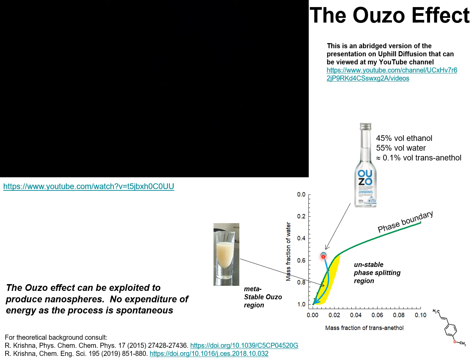This point represents the composition of Ouzo, and the addition of water apparently enters the metastable region indicated in yellow. If the composition trajectory were to follow a straight line, no entry into the metastable region would have been possible. The foray into the metastable region is a direct consequence of an equilibration trajectory that is serpentine in character.